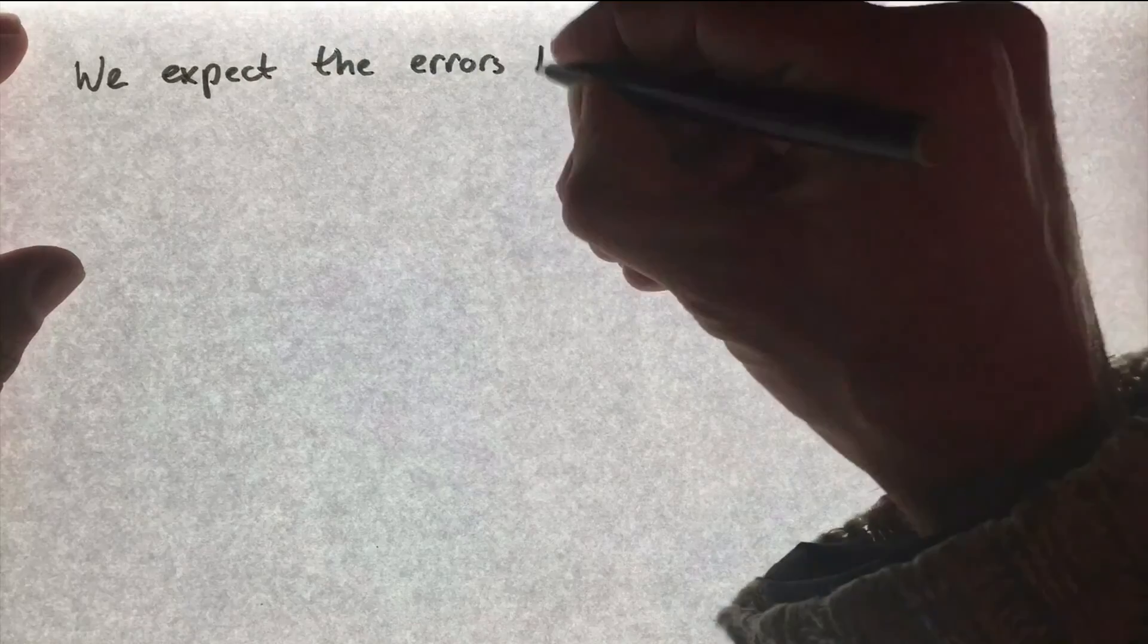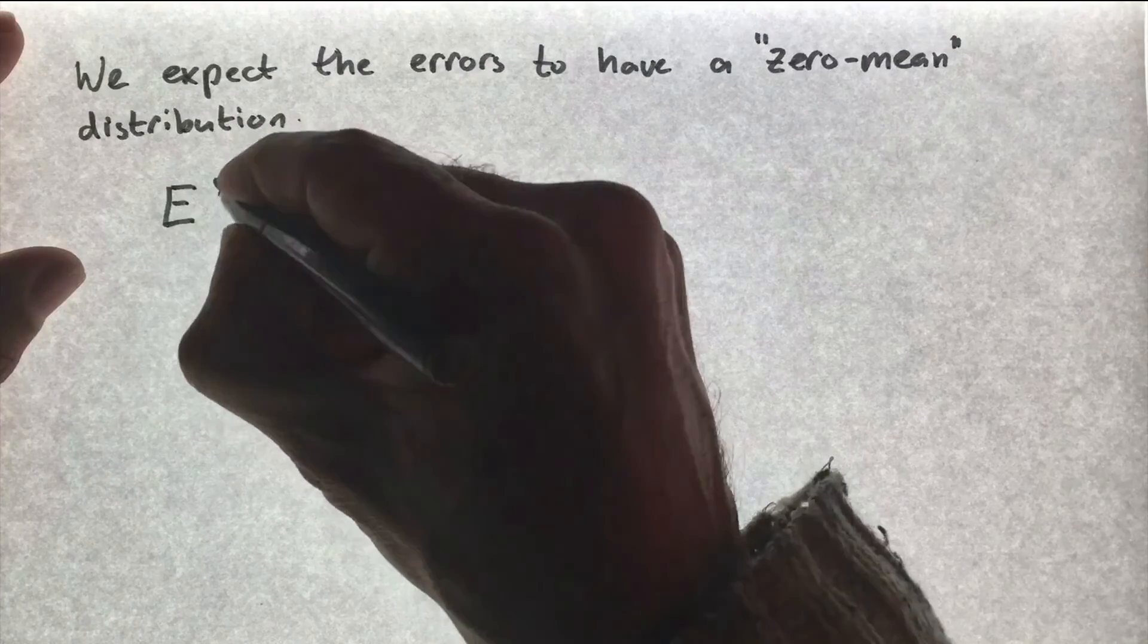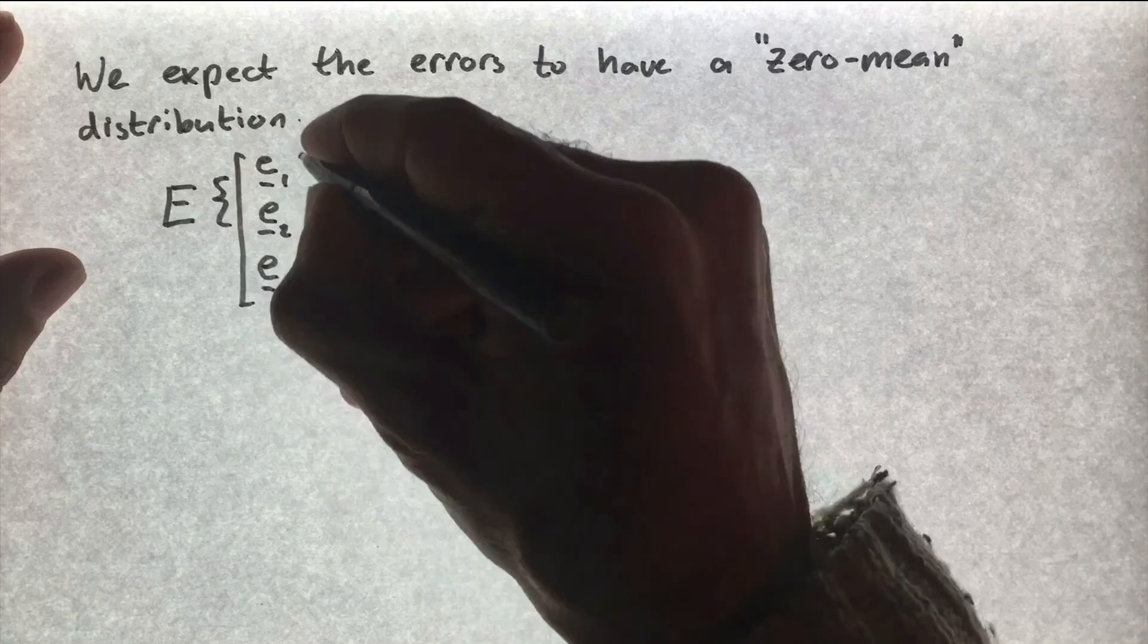We expect the errors to have a zero mean distribution. This means that we expect the errors to be all zero. This is denoted in this way.